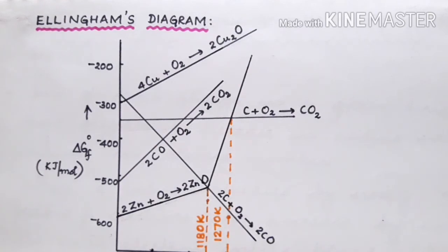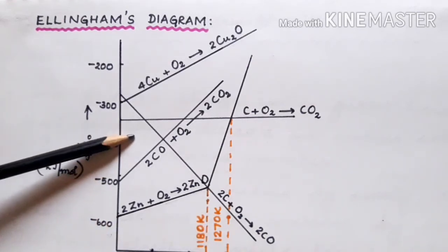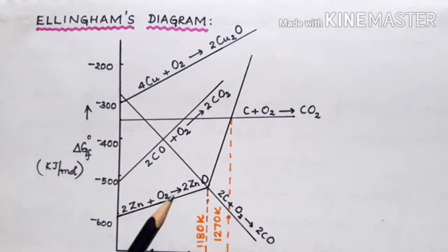Have a closer look at the Ellingham's diagram drawn here. You find that zinc has a lower line compared to that of carbon monoxide and carbon at low temperatures, but at high temperature zinc is the upper line compared to that of carbon.